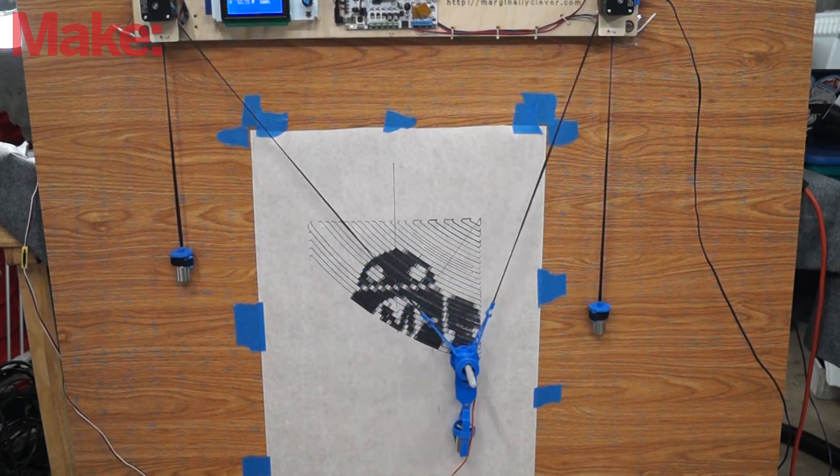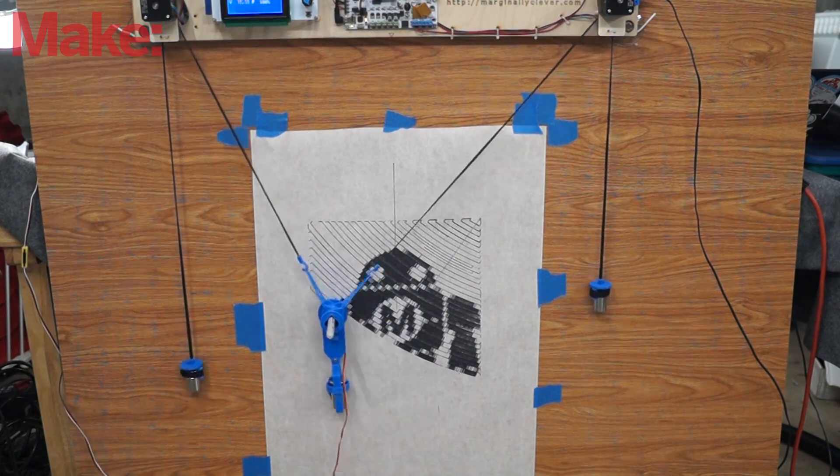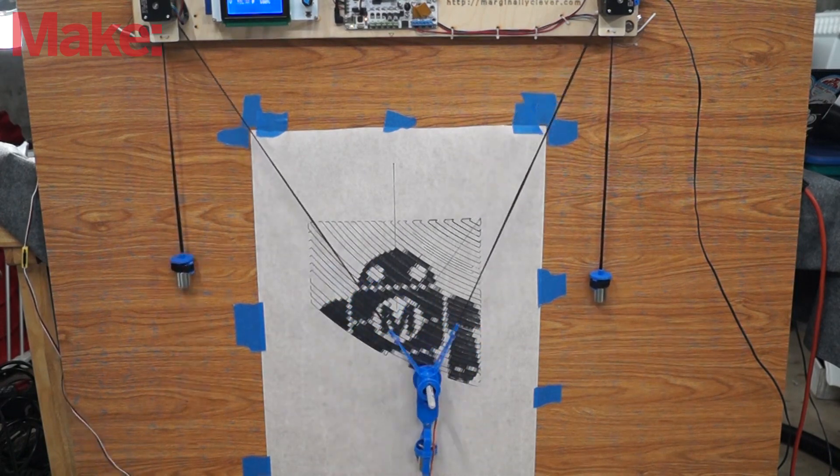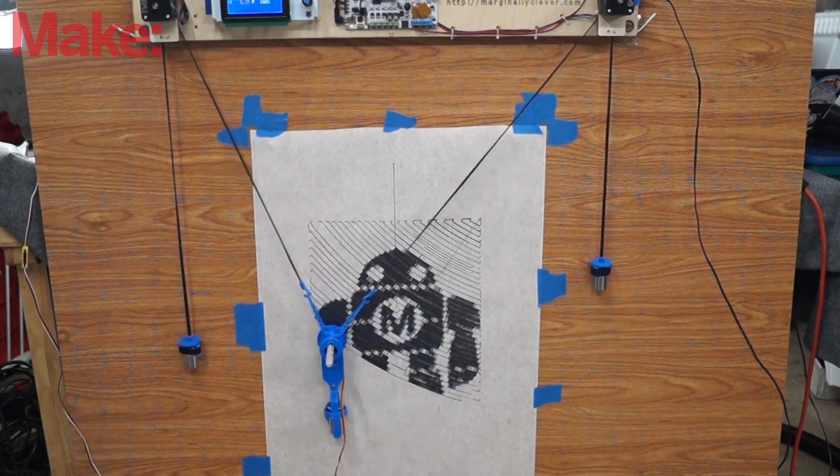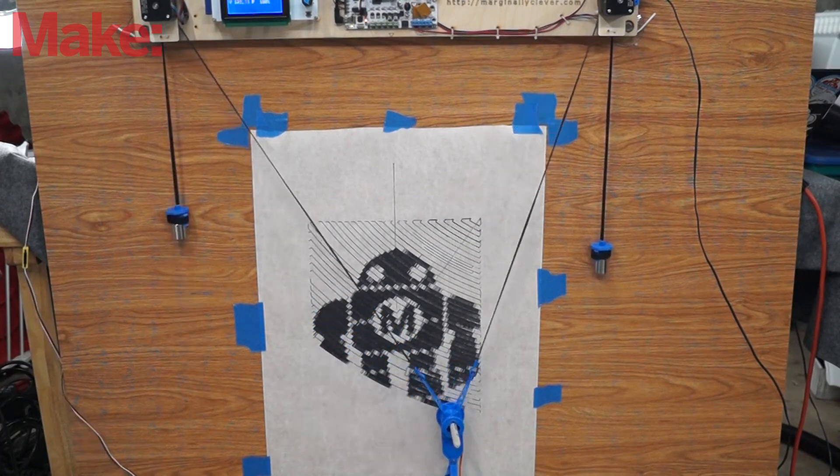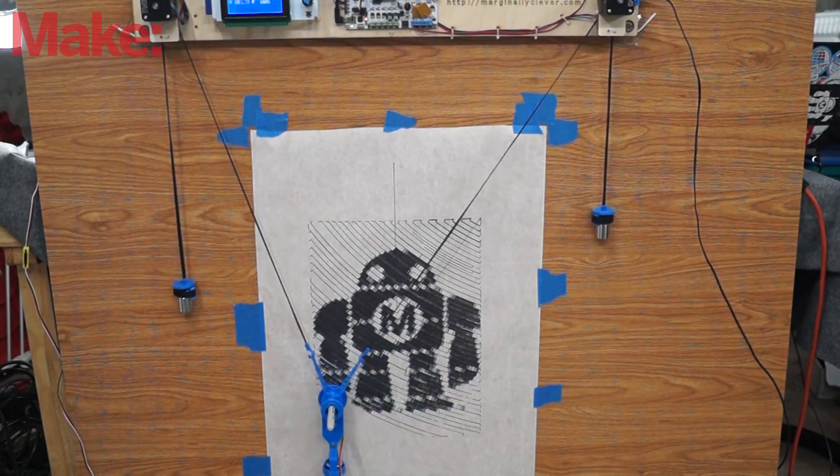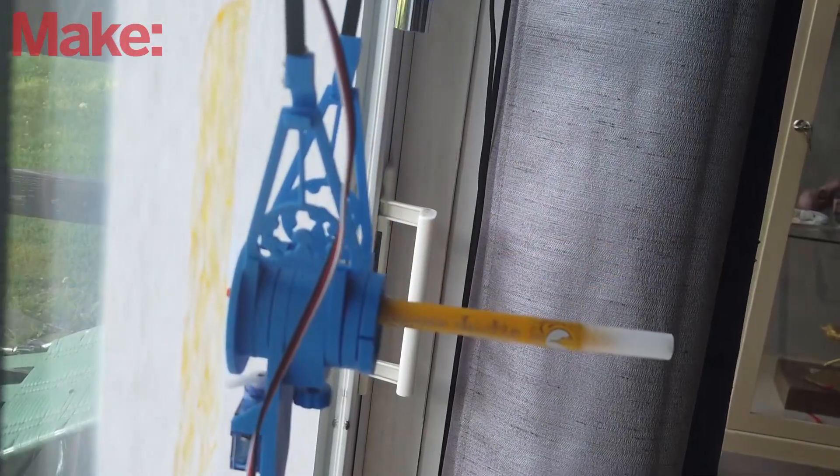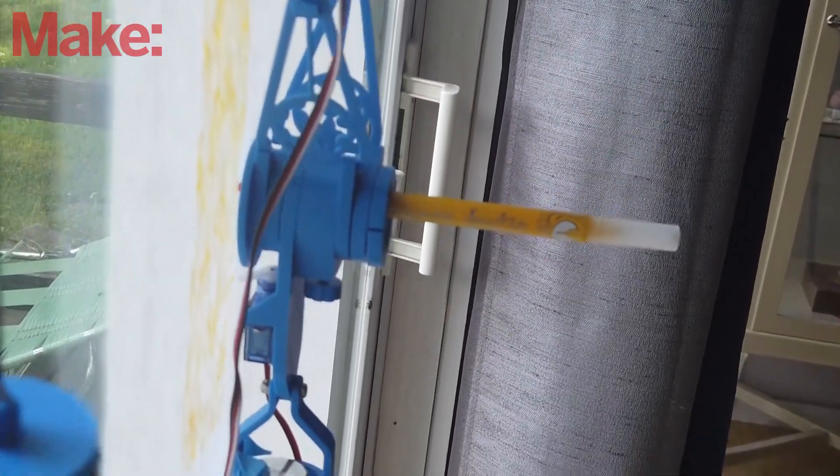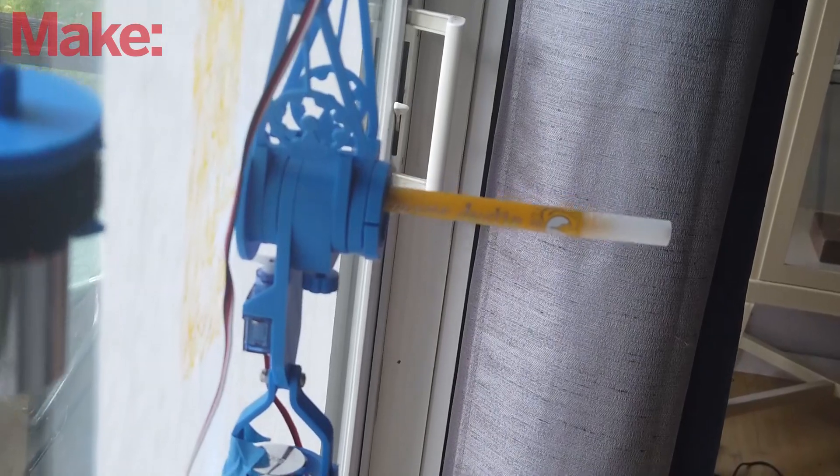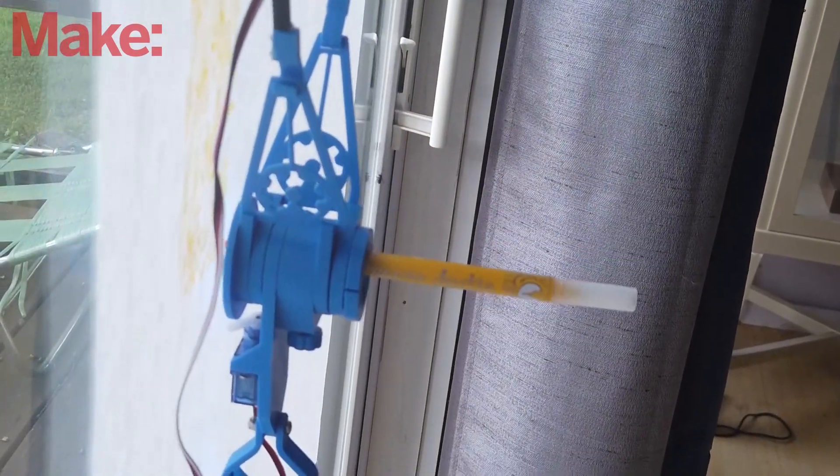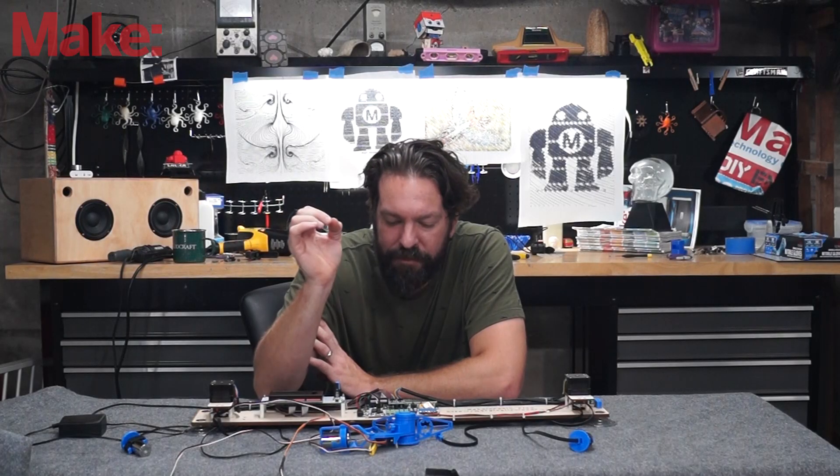Now if you're looking for a plotter for ultimate precision this probably isn't the plotter for you. This one I've seen at a lot of maker fairs and events out for public demonstrations and it always draws a crowd and it's more of a display piece. The pendant dangling down means that it can bounce around a little bit so you're not getting perfect ultimate precision out of it but that's not what it's meant for.